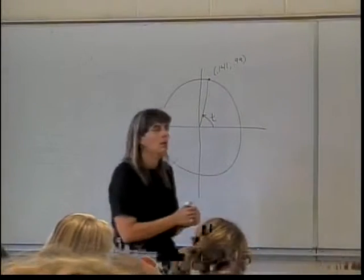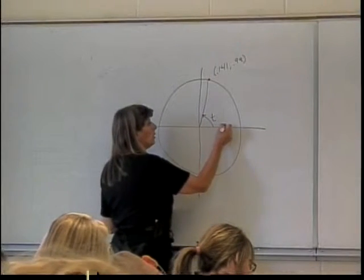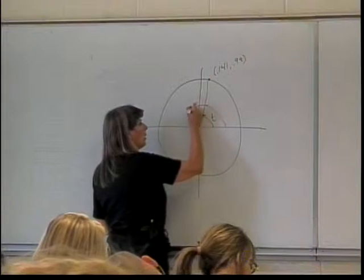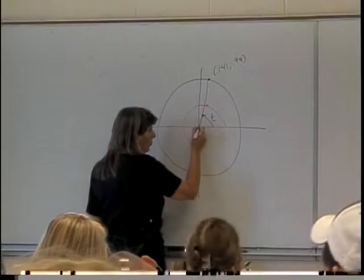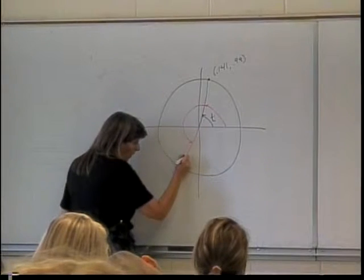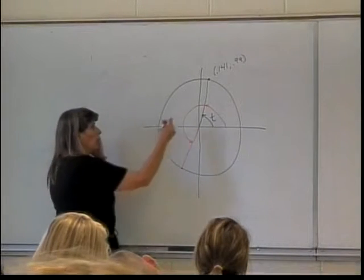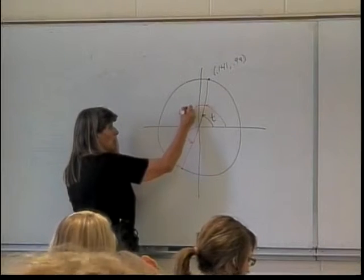Quadrant 4. Well, I start here. I go to T, and then I keep going pi more. So I'm down here 180 degrees further on. So here's where the angle T plus pi runs into the unit circle.